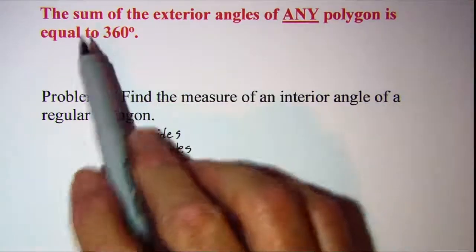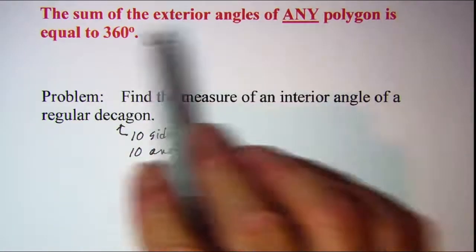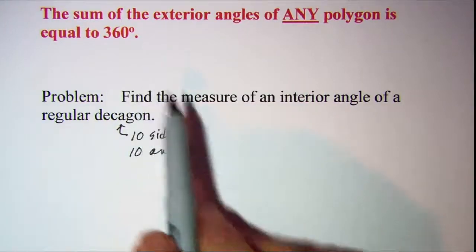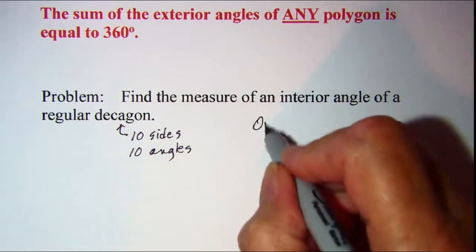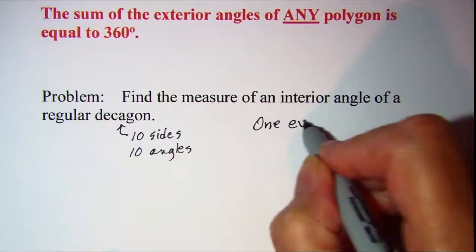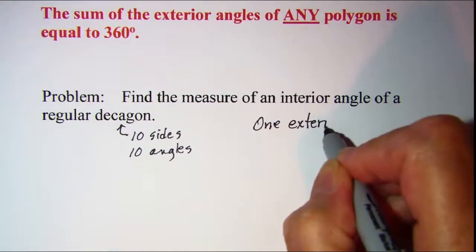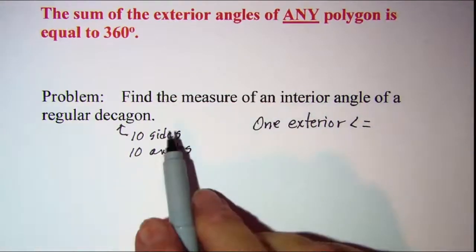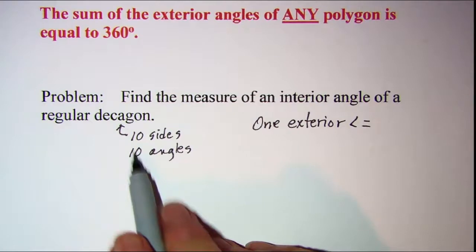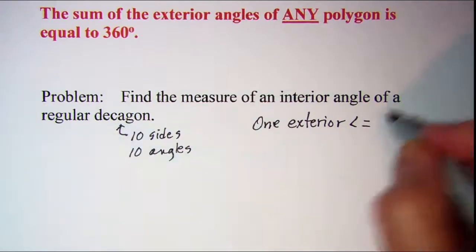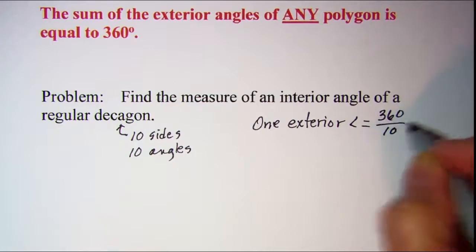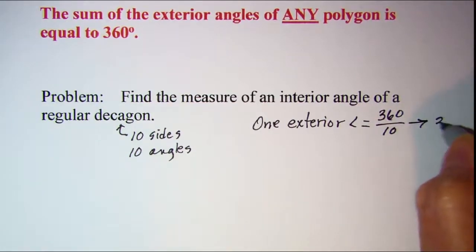So if the sum of the exterior angles is equal to 360 degrees, we can find the measure of one exterior angle by taking 360 divided by 10 for a decagon. So 360 divided by 10 gives us an exterior angle that measures 36 degrees.